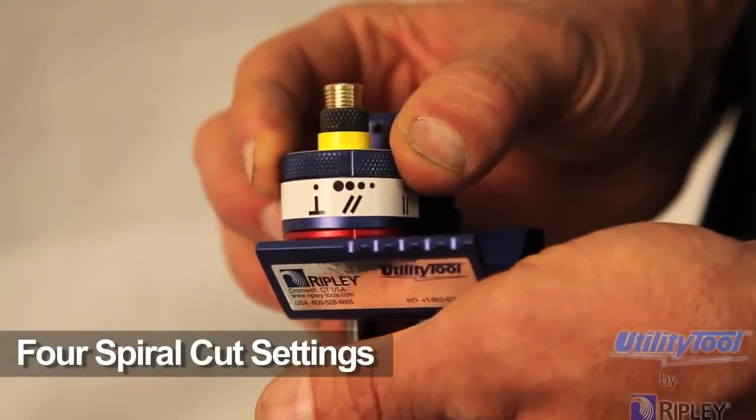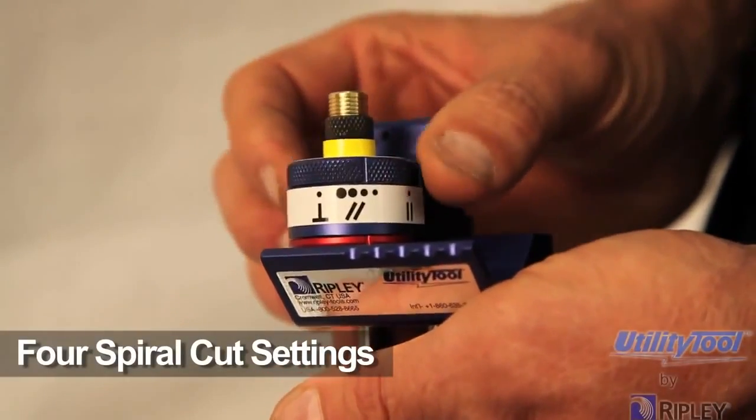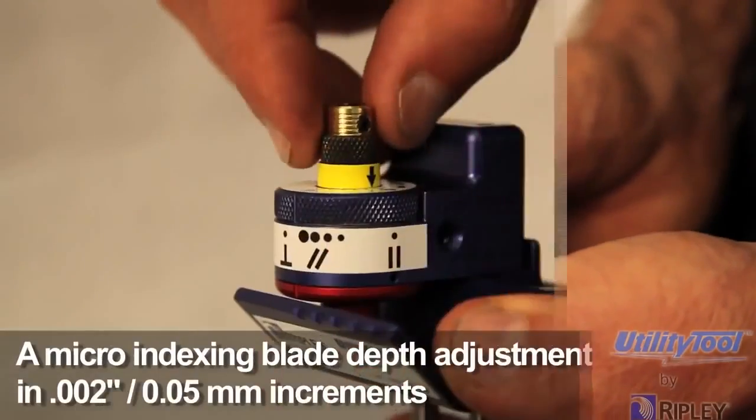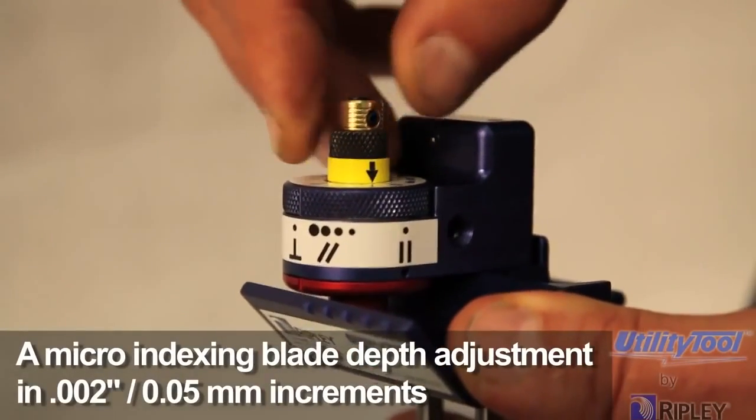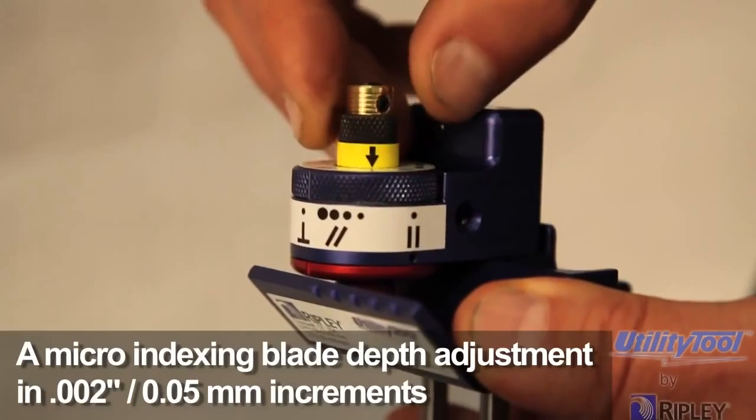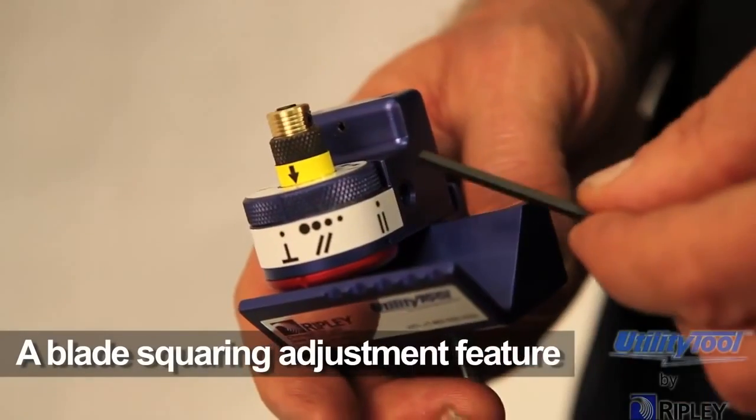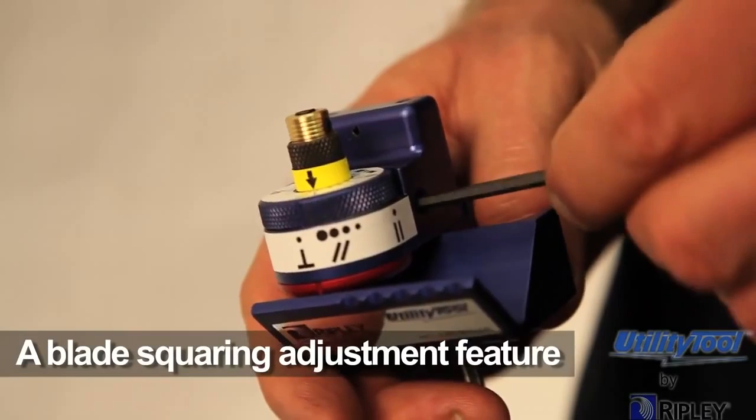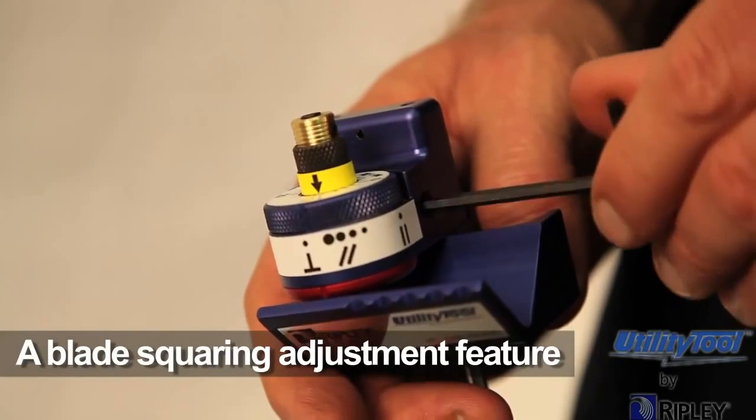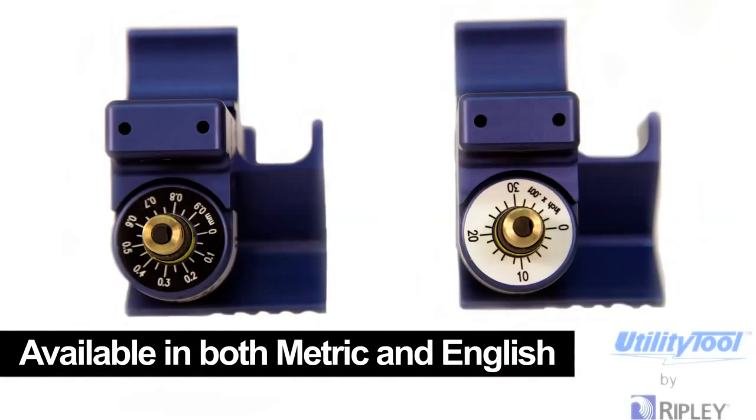Four spiral cut settings for optimal chip width, a micro indexing blade depth adjustment in 2,000 depth increments, a blade squaring adjustment feature, and available in both metric and English measurement units.